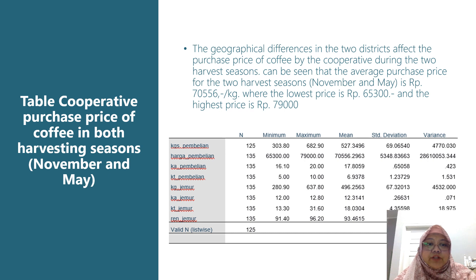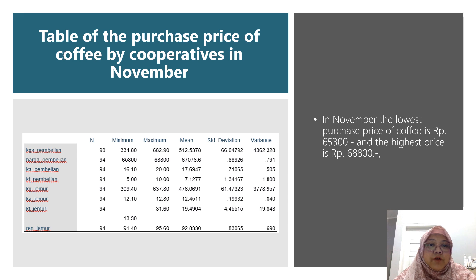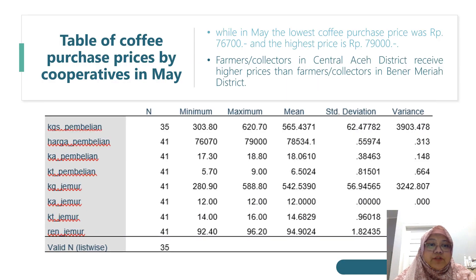This is the table of cooperative purchase prices of the coffee in both harvesting seasons, November and May. The geographical differences in the two districts affect the purchase price of the coffee by the cooperative during the harvest seasons. The average purchase price for the two harvest seasons is 70,556 rupiah per kilogram, with the lowest price at 65,300 rupiah and the highest price at 79,000 rupiah. In November, the lowest purchase price is 65,300 rupiah and the highest is 68,800 rupiah. In May, the lowest price was 76,700 rupiah and the highest was 79,000 rupiah. Farmers or collectors in Central Aceh District receive higher prices than those in Bener Meriah District.